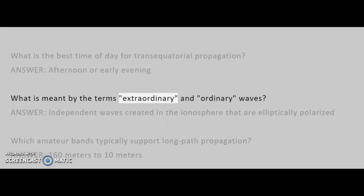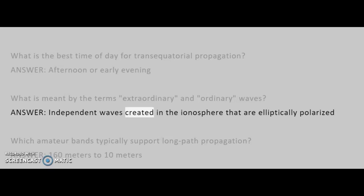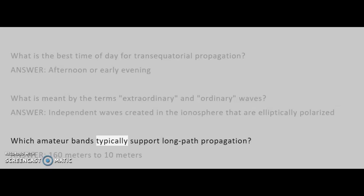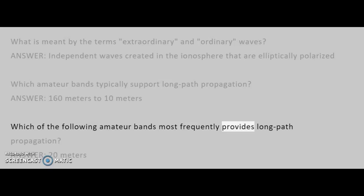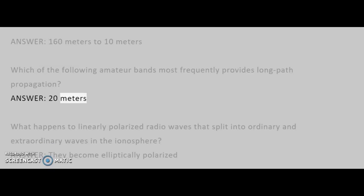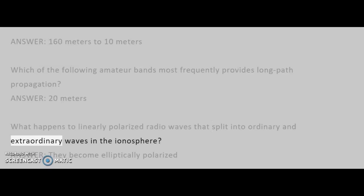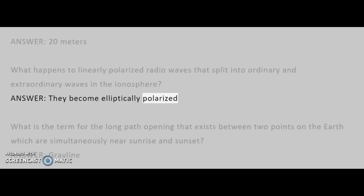What is meant by the terms extraordinary and ordinary waves? Answer: independent waves created in the ionosphere that are elliptically polarized. Which amateur bands typically support long path propagation? Answer: 160 meters to 10 meters. Which amateur band most frequently provides long path propagation? Answer: 20 meters. What happens to linearly polarized radio waves that split into ordinary and extraordinary waves in the ionosphere? Answer: they become elliptically polarized.